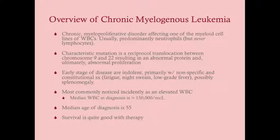It's never lymphocytes because if the disease affected lymphocyte proliferation, you would have CLL — chronic lymphocytic leukemia. CML tends to be a disease of neutrophils, but it could be any line in the myeloid family. Characteristically, CML has a very specific mutation: a reciprocal translocation between chromosomes 9 and 22, resulting in an abnormal protein and ultimately abnormal cell proliferation.